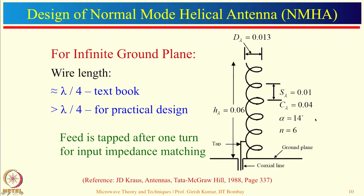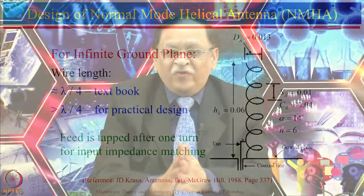Everything is in normalized fashion. For example, at 3 GHz, wavelength will be 10 cm. C_lambda = 0.04, so C equals 0.04 × 10 cm. From that you can find the value of C and correspondingly all other parameters. For normal mode helical antenna, the diameter of the helix wire plays a very important role — bandwidth is directly proportional to the diameter of the helix wire. So if you want larger bandwidth, take a thicker wire.